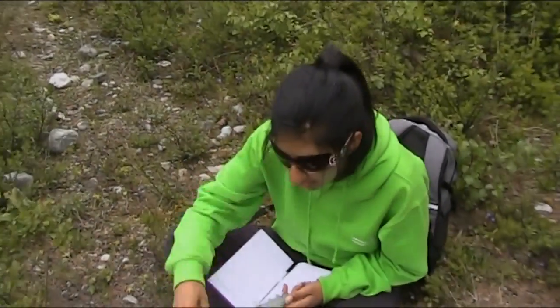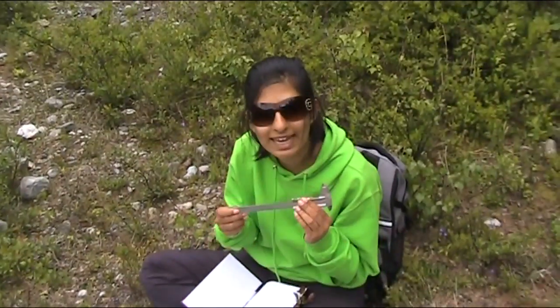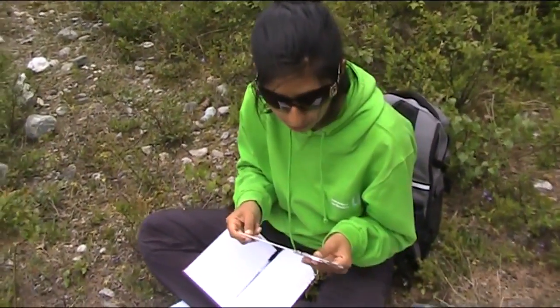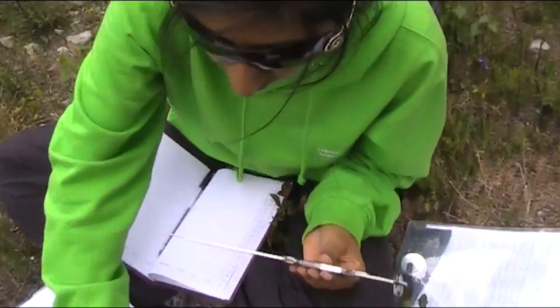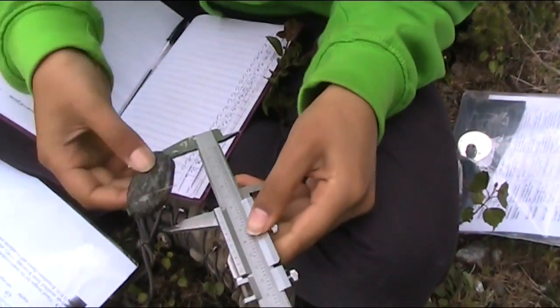I've just collected some samples from the spring. What I'm going to do now is using a caliper, which is a measuring tool to measure clasts. I'm just going to grab a pebble and I'm going to measure the A, B, and C axes.